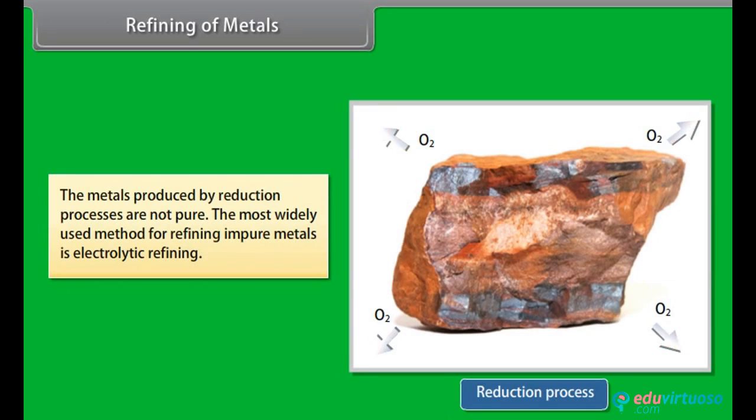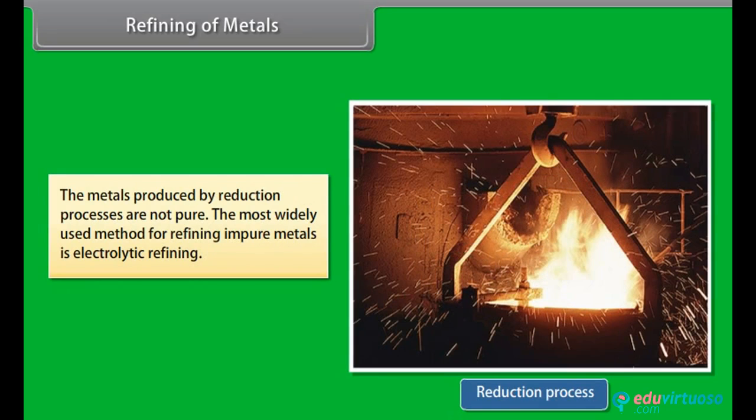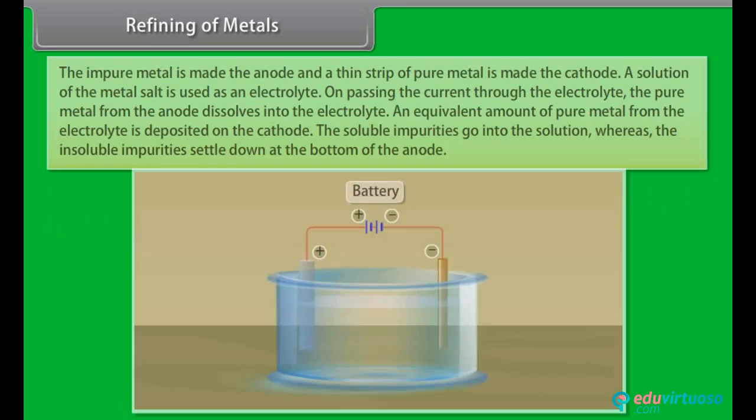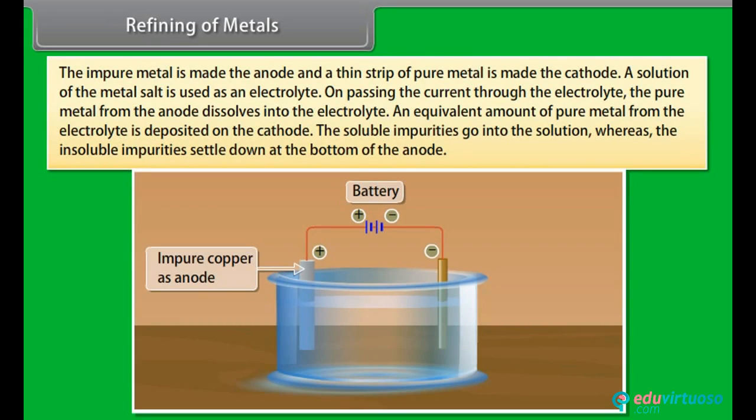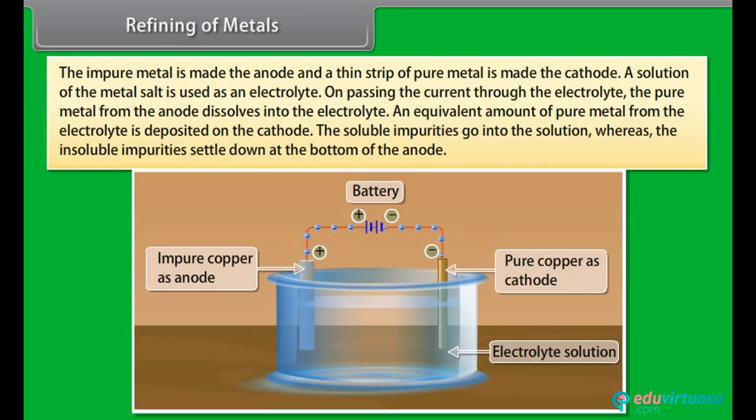Refining of metals: The metals produced by reduction processes are not pure. They still contain impurities which must be removed to obtain pure metals. The most widely used method for refining impure metals is electrolytic refining. Many metals are refined electrolytically. The impure metal is made the anode and a thin strip of pure metal is made the cathode. A solution of the metal salt is used as an electrolyte. On passing the current through the electrolyte, the pure metal from the anode dissolves into the electrolyte. An equivalent amount of pure metal from the electrolyte is deposited on the cathode. The soluble impurities go into the solution, whereas the insoluble impurities settle down at the bottom of the anode. These are known as anode mud.